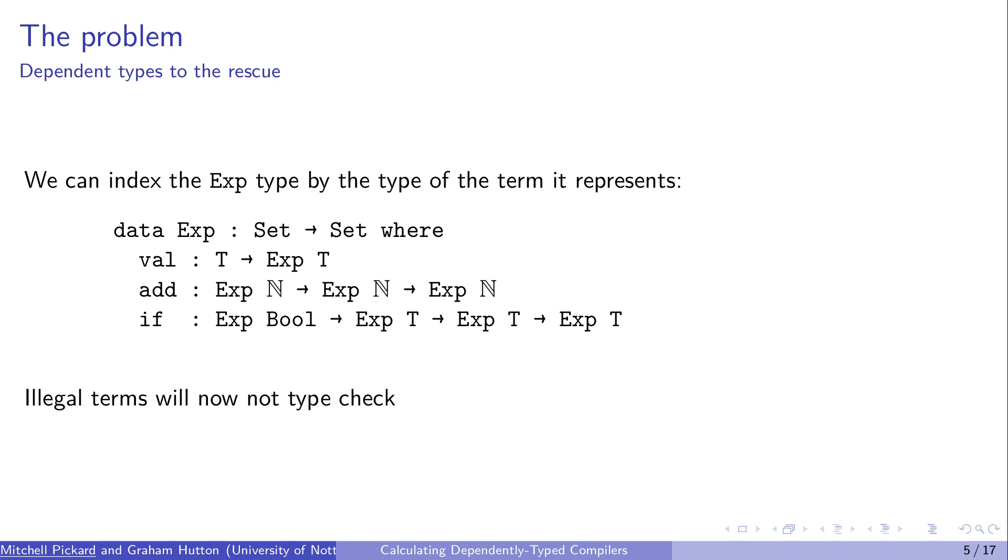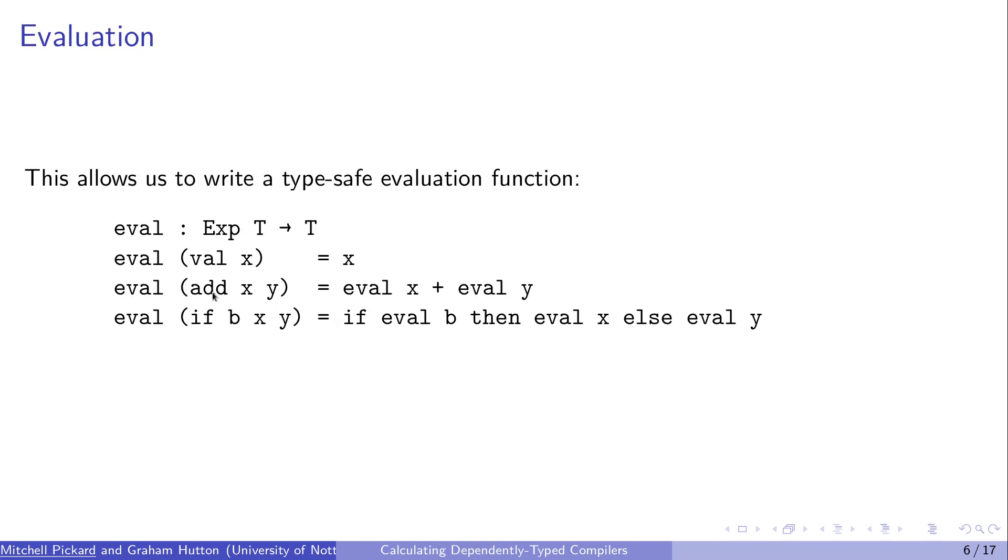And this stops illegal terms type checking. You can't add together true and five now, because this add has to take two natural number terms. And then we can write a simple evaluation function, which is going to be the specification of our language. This is how the language behaves. We take the exp of t, whatever type this is, and return a basic Agda type of t.